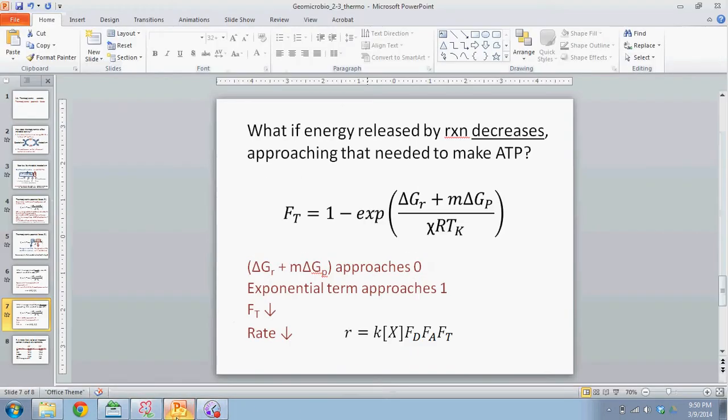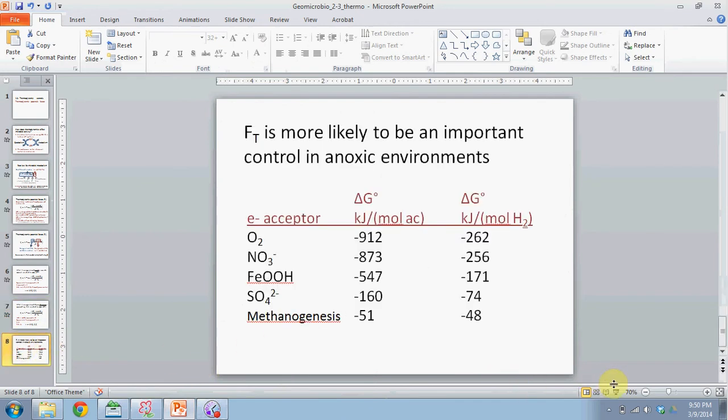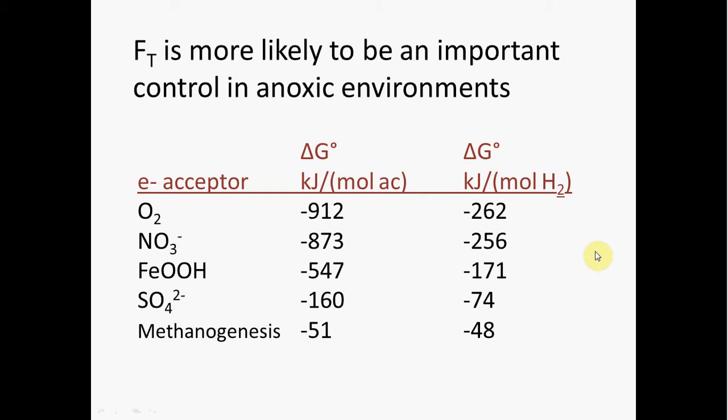So let's go back to the slides and just finish up. So where is this important? Well, it's more likely to be important as a control on microbial reaction rates in anoxic environments. Oxygen respiration, as well as nitrate reduction for that matter, are extremely favorable reactions. You don't need a whole lot of oxygen around, you don't need a whole lot of nitrate around, in order for those reactions to be very favorable - much more favorable than is needed by the cell to phosphorylate ADP. As a result of that, thermodynamic controls often are not important in controlling the rate of those reactions. On the other hand, when it comes to iron reduction, sulfate reduction, methanogenesis, some of the other metabolisms that can exist in anoxic environments...